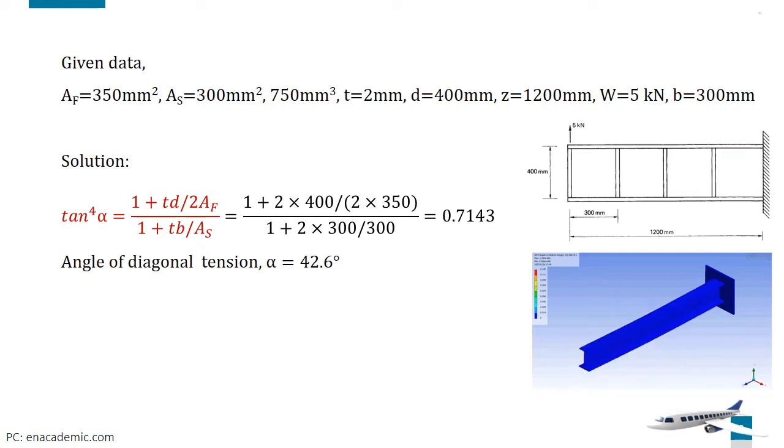The maximum flange stress will occur in the top flange at the built-in end where the bending moment on the beam is greatest and the stresses due to bending and diagonal tension are additive.